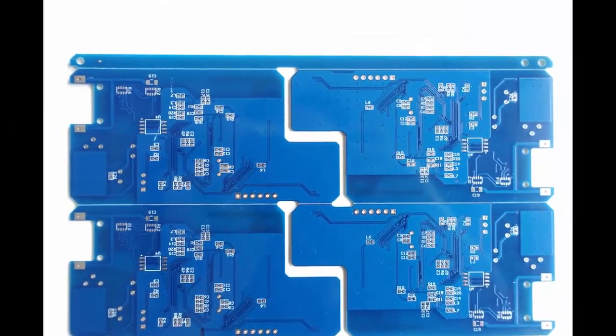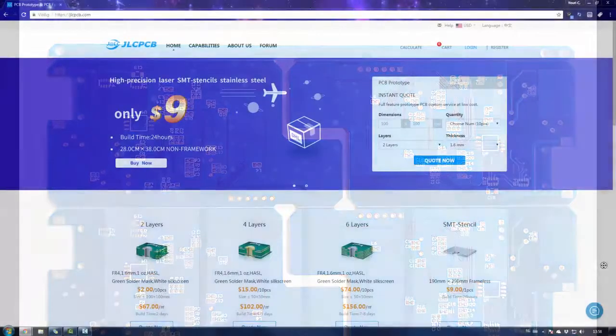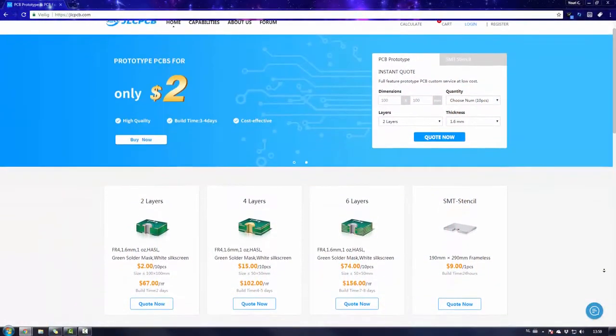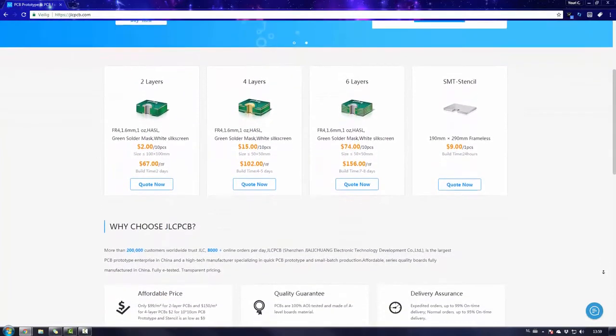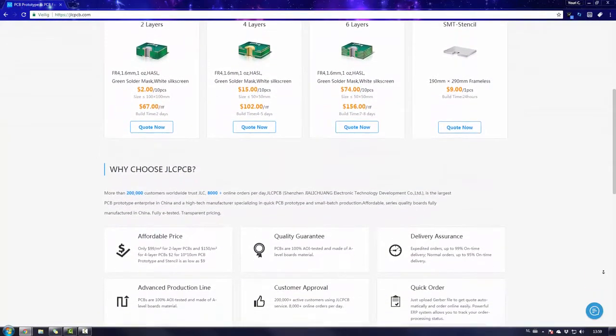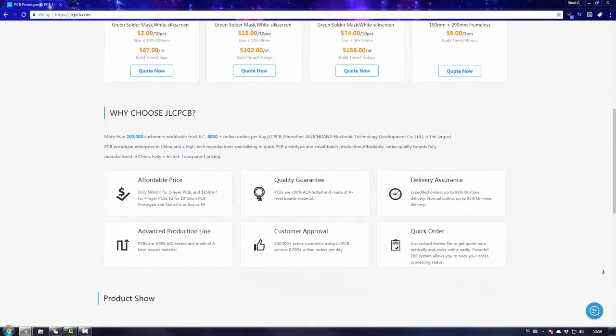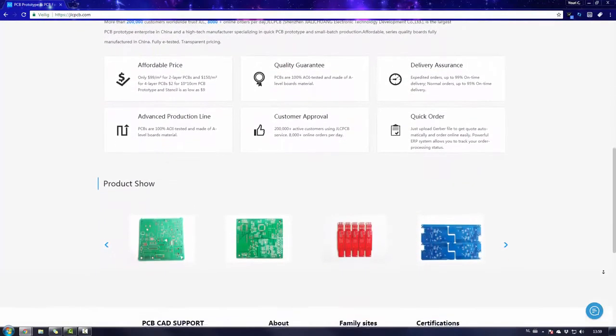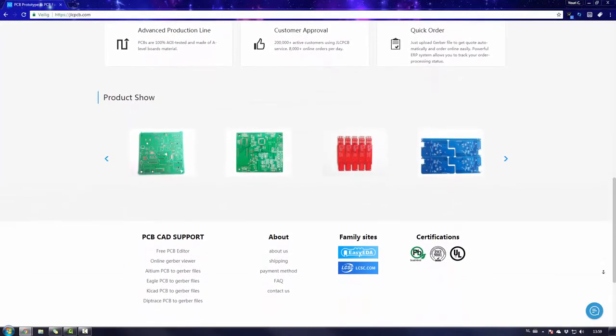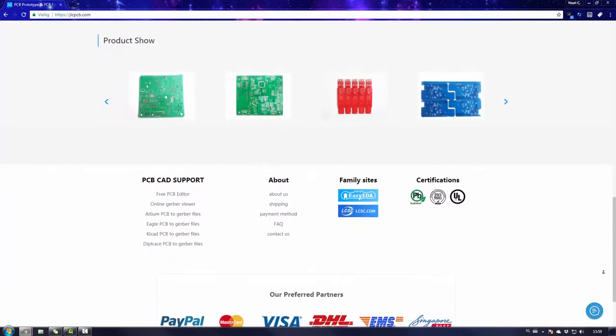JLCPCB offers you an affordable price of only $99 per square meter for two-sided PCBs. You can get 10 two-layer PCBs up to 100 by 100 millimeters for only $2. All PCBs are 100% tested and made of A-level board material with up to 99% on-time delivery. You will have them in no time.